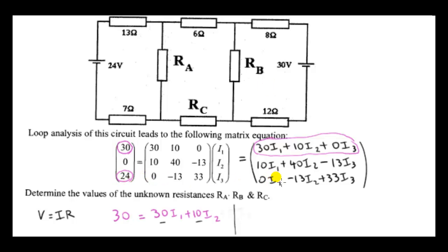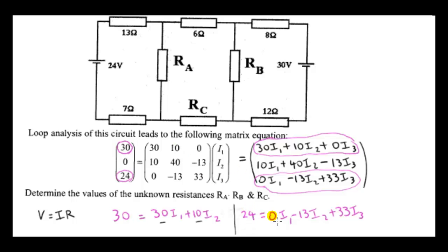Let's look at the third equation: 24 equals this expression here. This equation must refer to this loop over here — the voltage source is 24. The voltage drop due to current I1 is zero; we have zero I1, which is zero. So current I1 does not flow in this loop. The currents that flow in this loop are I2 and I3, and where exactly they are has to be determined. I2 could flow through this wire and I3 through the rest of the loop, or vice versa.